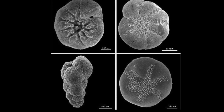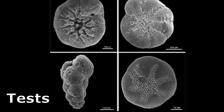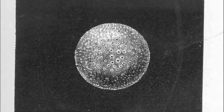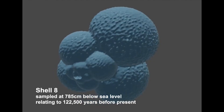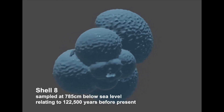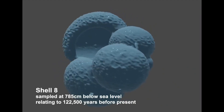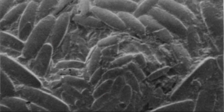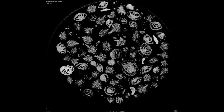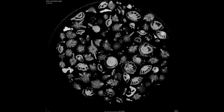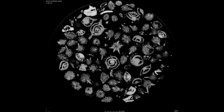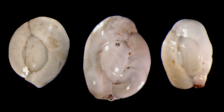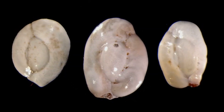The majority of species have shells, called tests. The simplest forms are open tubes or hollow spheres. More complex shells are commonly divided into chambers that are added during growth. The shell may be made of many different materials, such as organic compounds, sand grains, and other particles cemented together, or crystalline calcite. The shell may have a smooth or rough surface.